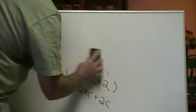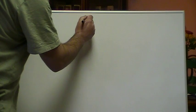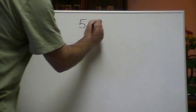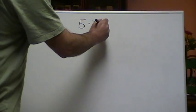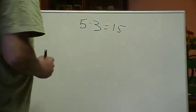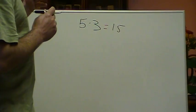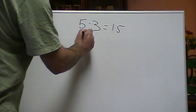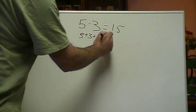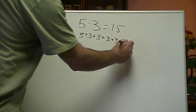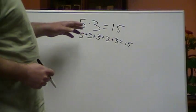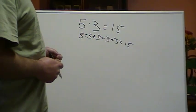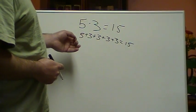Now, since you know the procedure, I want to quickly show you why it works. Let's say we have a very simple multiplication problem: 5 times 3. You know this equals 15. But what multiplication is, is a fast way to do addition. This is a short way to write 3 plus 3 plus 3 plus 3 plus 3 equals 15. So multiplication, in essence, is a shorthand for addition — instead of writing 3 five times, I can just say 5 times 3.